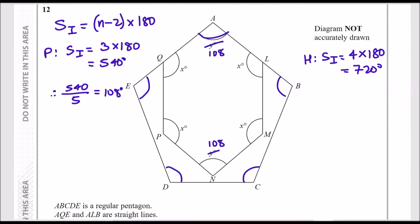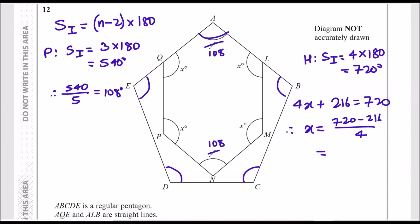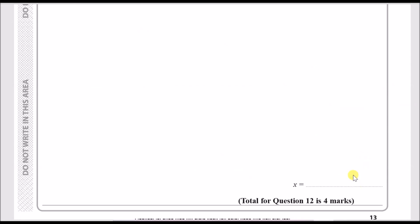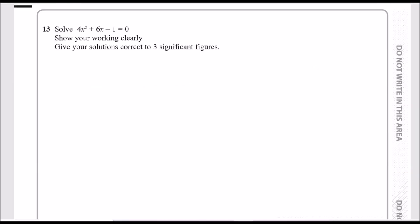Now we add up all the angles: x plus x plus x plus x is 4x, plus two angles of 108 which is 216, and that must total 720. Rearranging: x equals (720 minus 216) divided by 4, and the answer is 126 degrees. That's four marks for that question.